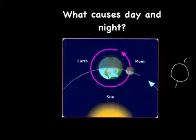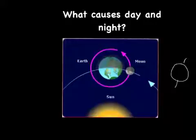So, our day and night is caused by the rotation of the Earth on its axis, and the different amounts of day and night are caused by the tilt of the Earth and where the Earth is in its orbit around the sun.